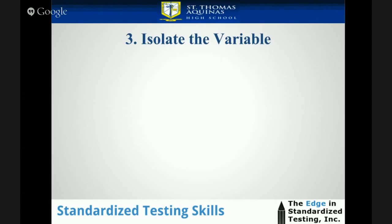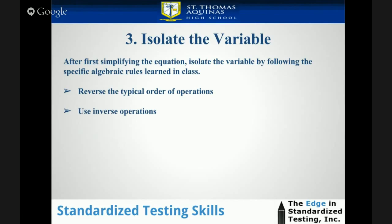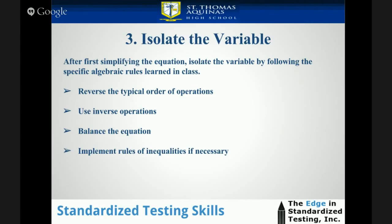Step 3: isolate the variable. After first simplifying the equation, isolate the variable by following the specific algebraic rules you've learned in class. These include reversing the typical order of operations — order of operations is usually parentheses first, multiplication before addition, and so forth; we want to reverse that, going addition first, then multiplication. Another way to think about it: start as far away from the variable as possible and work your way towards the variable. Either way, you're reversing the typical order of operations. While doing so, use inverse operations — use subtraction to get rid of addition, use division to get rid of multiplication, and so on. Always remember to balance the equation: whatever you do to the left side must be done to the right.